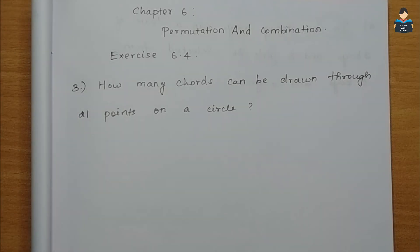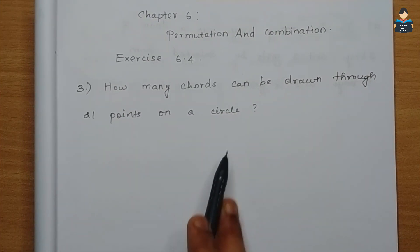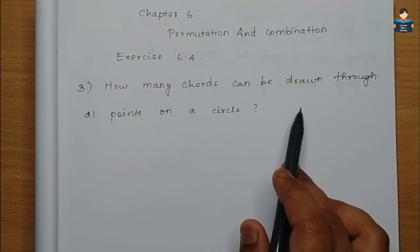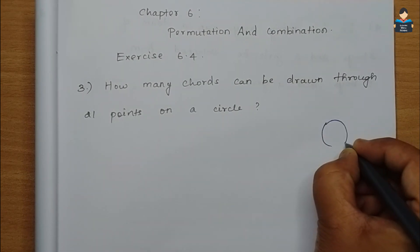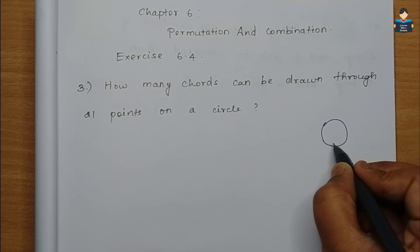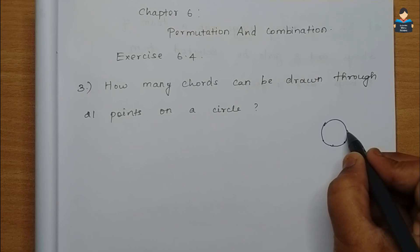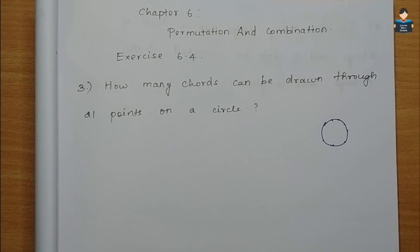Hello everyone, welcome to our channel. In this video, Chapter 6 Permutation and Combination, Exercise 6.4, Question 3: how many cards can be drawn through 21 points on a circle? So in the circle, there are 21 points.